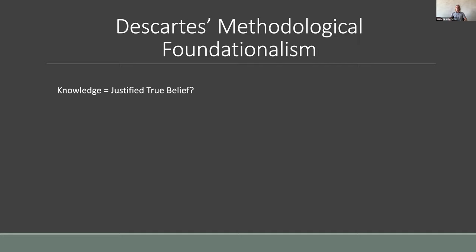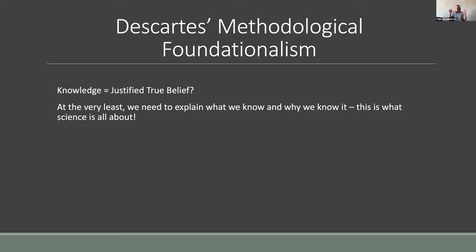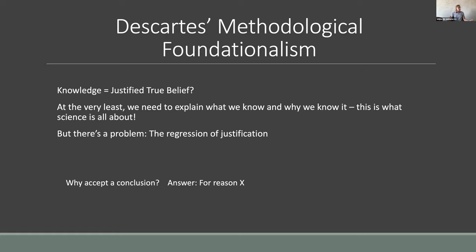This is a controversial definition — Plato shows it to be controversial in the Theaetetus, and in an epistemology course you'd read about fake barns and stopped clocks that show why justified true belief isn't sufficient. But we'll take it as a helpful first tool. At the very least we need to explain what we know and why we know it — that's what science is about. But there's a problem: the regression of justification.